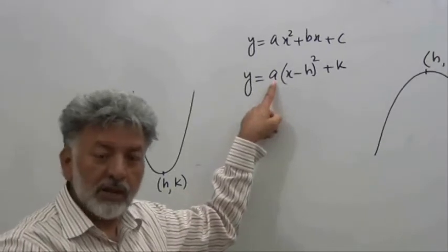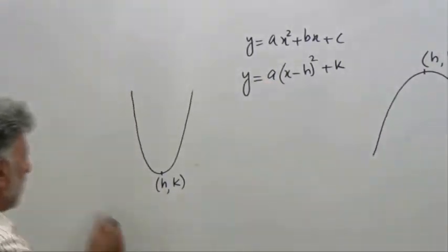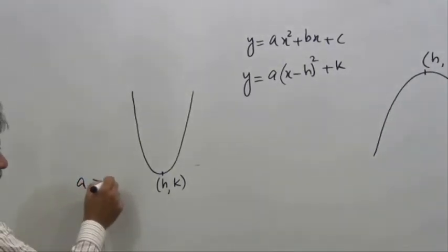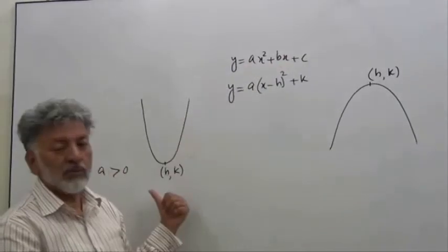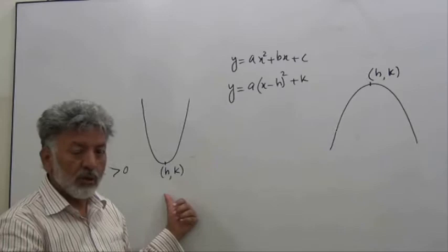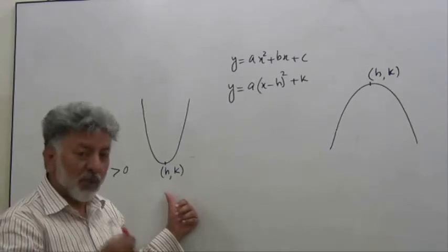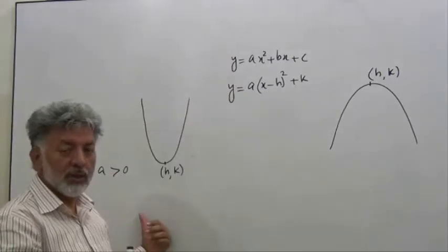If a is positive, the quadratic expression will have a minimum value. Irrespective of the size, we don't have to see if it's big or small, but only if it is positive. So if it is positive, then the expression has a minimum value.